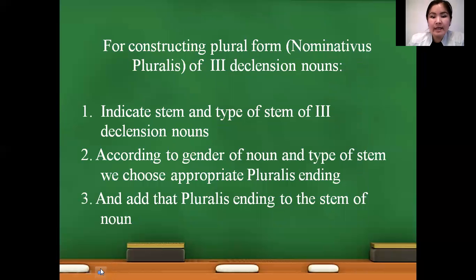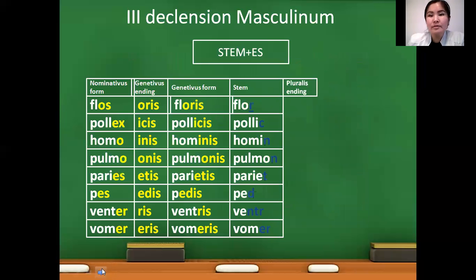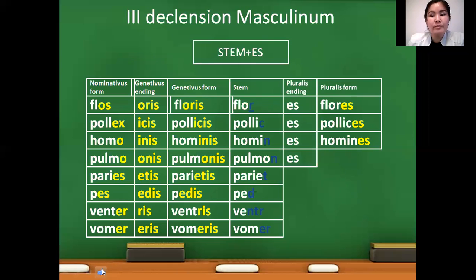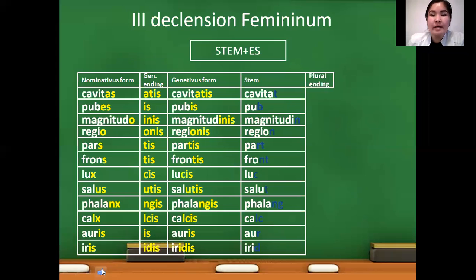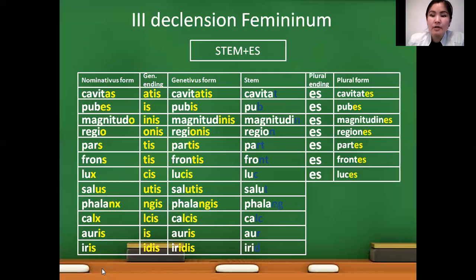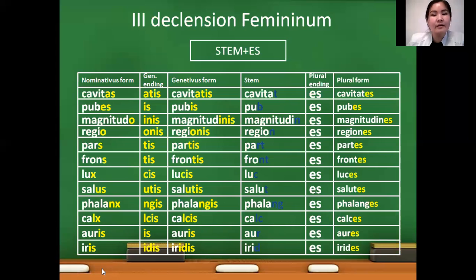We already indicated stems and now we can add the pluralis ending to the stem to construct Nominativus Pluralis. For masculinum nouns, we use the structure stem plus -es. Pluralis forms will be: flores (flowers), pollices (thumbs), homines (people), pulmones (lungs), parietes, pedes (feet), ventres, and vomeres. In femininum, again stem plus -es structure is used: cavitates, pubes, magnitudines, regiones, partes, frontes, luces, salutes, phalanges, calces, aures, and irides.